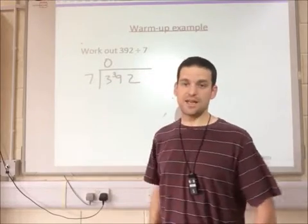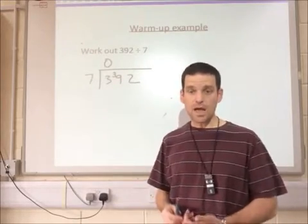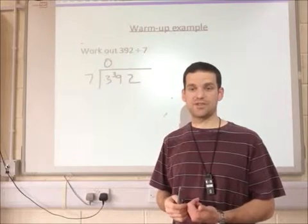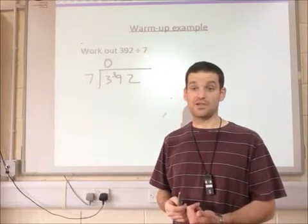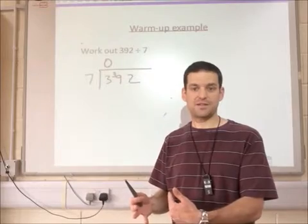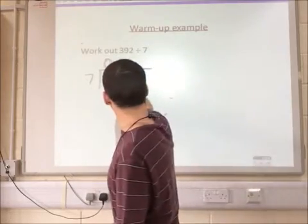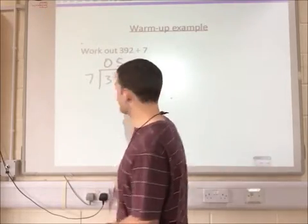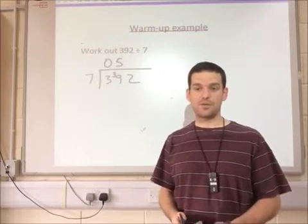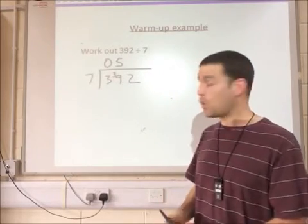So can I divide 39 by seven? I know from the times tables that seven times five is 35. That's as near as I can get to 39. So I put five up there. Seven goes into 39 five times with a remainder of four.